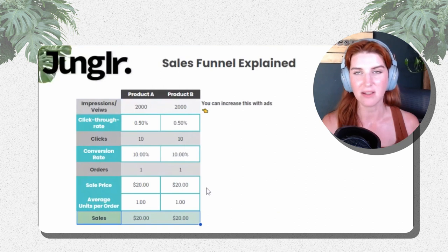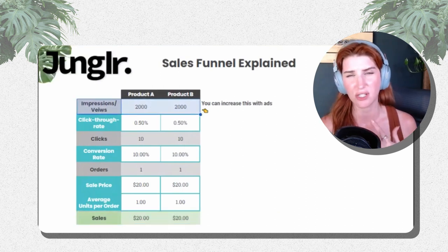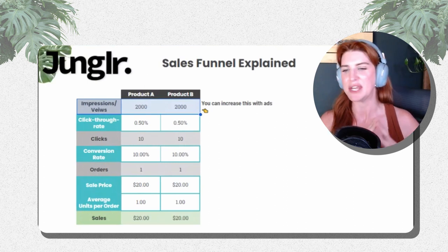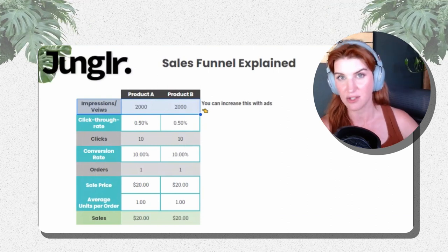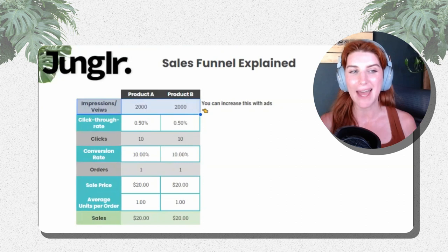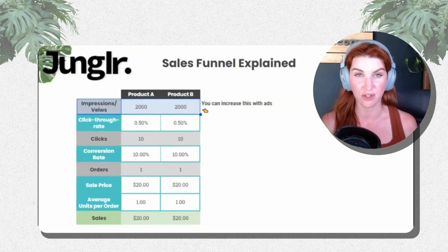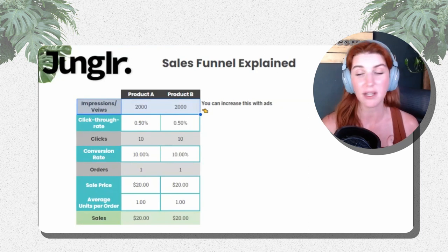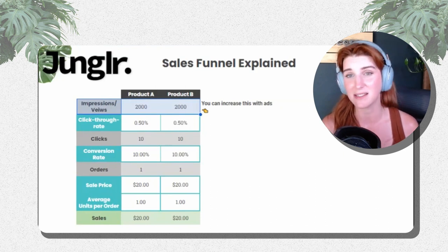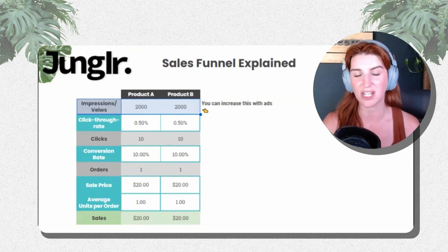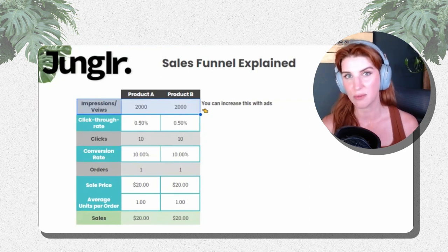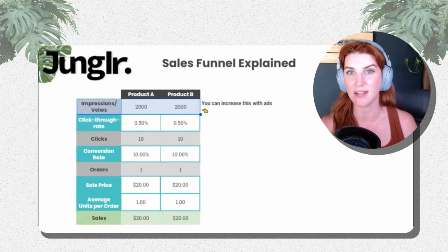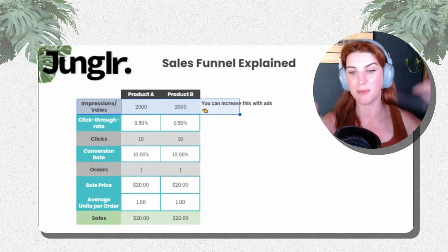Let's go chronologically. The first thing is impressions or views. When you think impressions, you think ads and getting more impressions, which is important, but also think of this as views in the search grid. You can get an understanding of this from a total account standpoint using Search Query Performance, however Search Query Performance only includes views in the search grid — it doesn't include widgets, product pages, off-site traffic, or sponsored display ads showing up off-site.